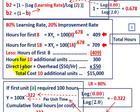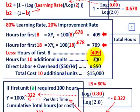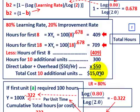For example, with direct labor and overhead at $50 per hour, we take $50 per hour times 300 hours for the 10 additional units, so our total cost for 10 additional units is $15,000.